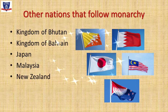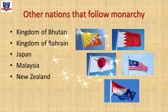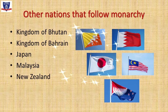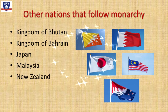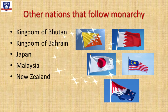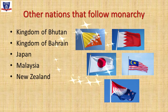Some of the other countries that follow a monarchy system of governance include the Kingdom of Bhutan, Kingdom of Bahrain, Japan, Malaysia, and New Zealand. Can you try to find the names of a few more nations that follow a monarchy?